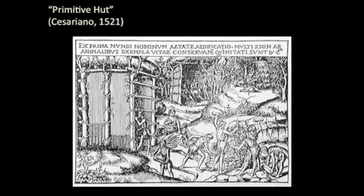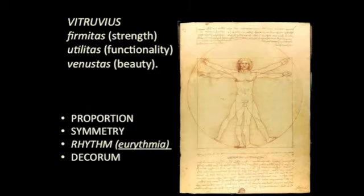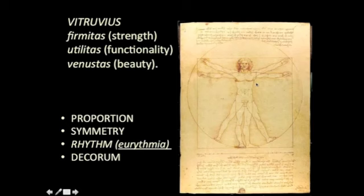Vitruvius also talks about the primitive hut, which we discussed briefly in our talk about the origins of the temple — how monumental stone architecture arises from very humble origins, from the simple act of twining together trees in the forest. Then Vitruvius talks about things very specific to him that have become real guideposts in how we think about architecture today. Vitruvius says architecture is required to have three qualities: firmness, commodity, and delight — or in Latin, firmitas, utilitas, venustas — basically meaning strength, functionality, and beauty.